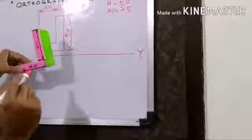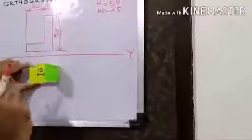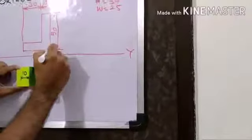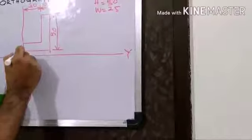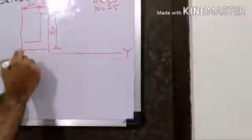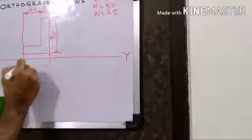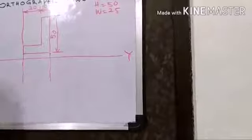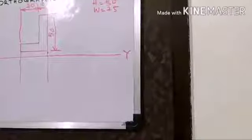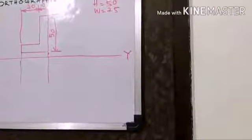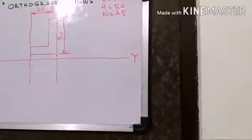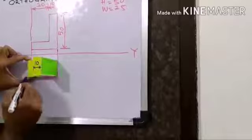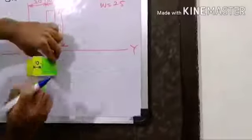The length is 40. What is its width? 25. So 40 I am getting from this. It is going to be a light line with a 2H pencil — a projector line. Now, for this, 25 is going to be its width. I am locating it.